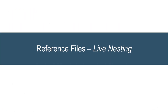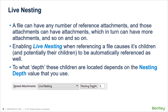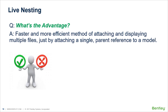The last thing I want to talk about is live nesting with reference files. A file can have any number of reference attachments, and those attachments can have attachments which in turn can have more attachments. If we enable live nesting when we attach reference files, it causes the children — and potentially their children — to automatically be referenced as well. The depth to which these children are pulled in depends on the nesting depth value you choose. The advantage is that it's faster and more efficient — you can select one file and have a nesting depth that grabs all of its children.